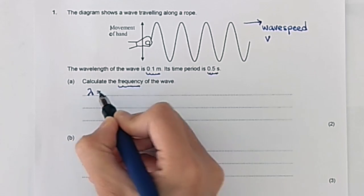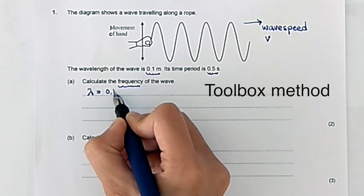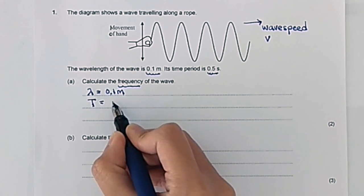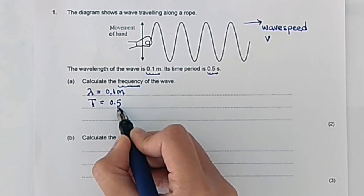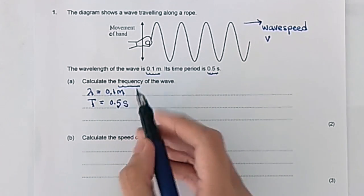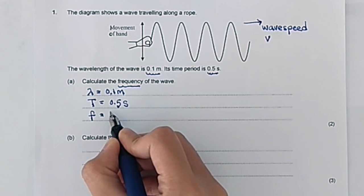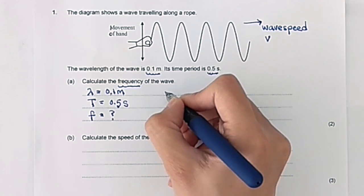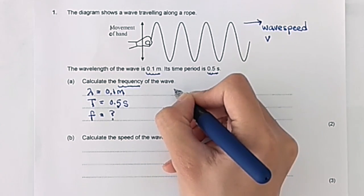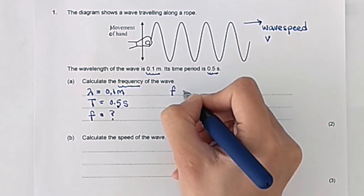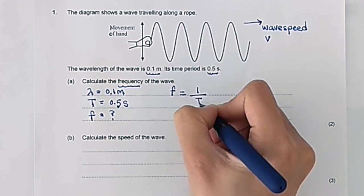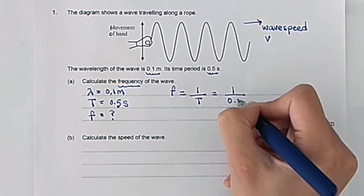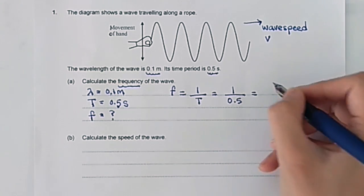Let's write down the known quantities. We can call this the toolbox method — writing down all the things we know from the question that might be useful later on. Since we want to find frequency, f is equal to question mark. Frequency is equal to the inverse of time period, so f equals 1 over T. Substituting 0.5 in and carrying out the division gives us 2. Don't forget the units, which is Hertz.